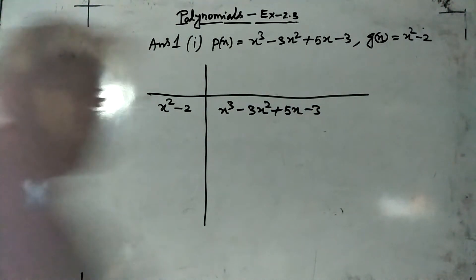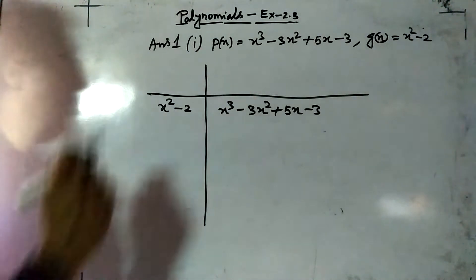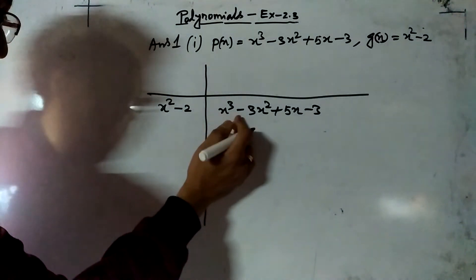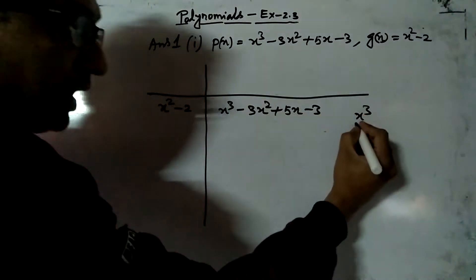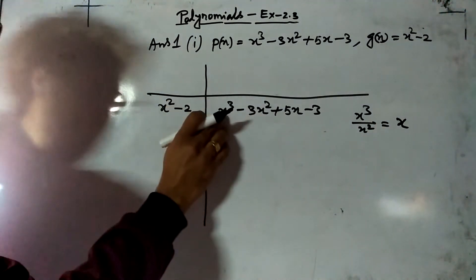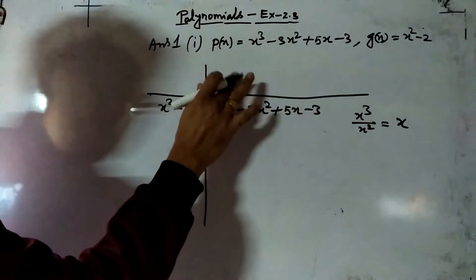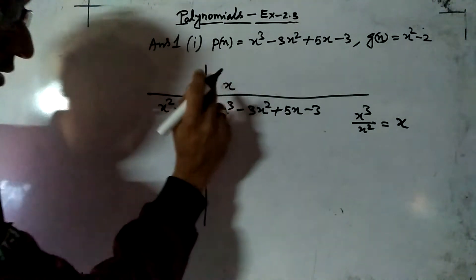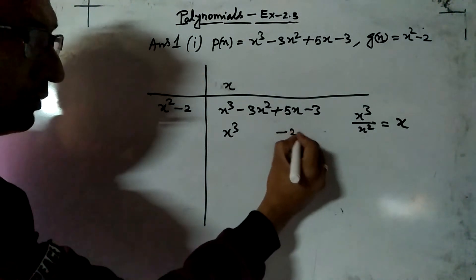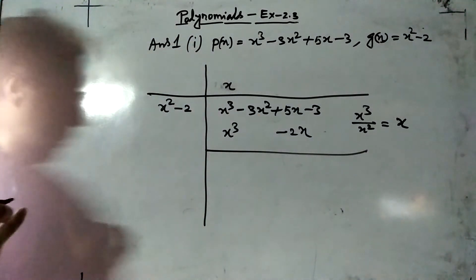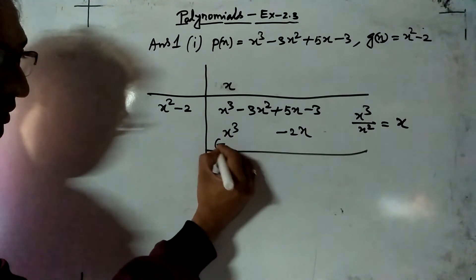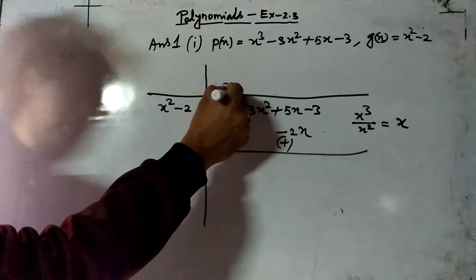Now we have to decide the first term of the quotient. How do we decide? We divide the first term of the dividend by the first term of the divisor. The first term of the dividend is x³ and the first term of the divisor is x². If you divide them, the base is the same so the powers will be subtracted. So we get x. That means after dividing, the first term of the quotient is x. Now, x multiplied by x² is x³, and x multiplied by -2 is -2x. We write like terms together, then subtract. When subtracting one polynomial from another, we change the sign of the second polynomial — plus becomes minus, minus becomes plus.